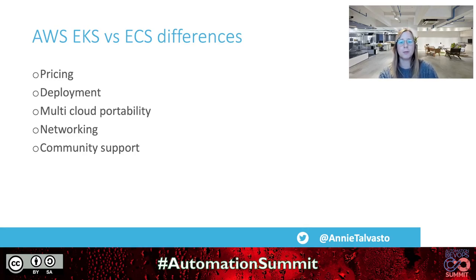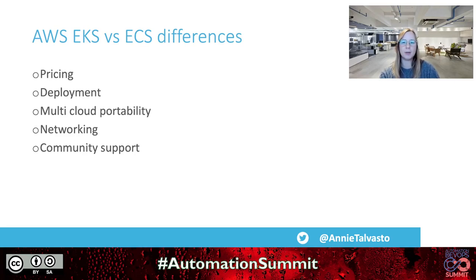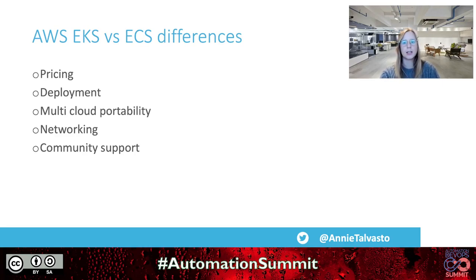On multi-cloud portability: the ideal scenario is moving workloads from one cloud provider to another with minimal disruption. ECS is an AWS proprietary technology, while EKS is based on open-source Kubernetes. EKS allows you to package containers and move them to another platform quickly if needed, giving you less vendor lock-in.